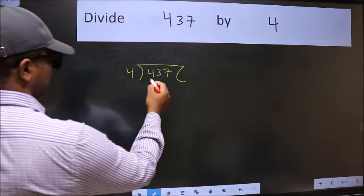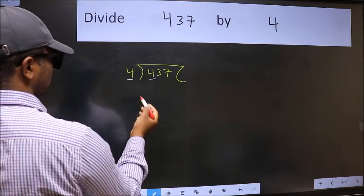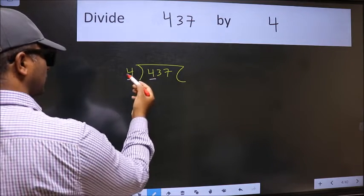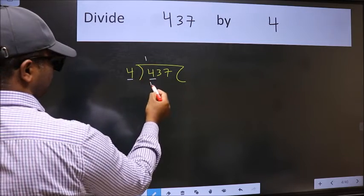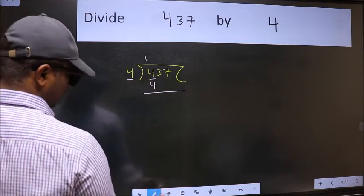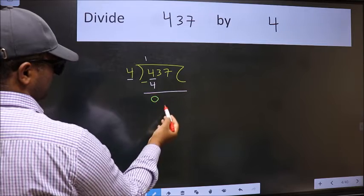Next, here we have 4 and here also 4. When do we get 4 in the 4 table? 4 once 4. Now we should subtract. We get 0.